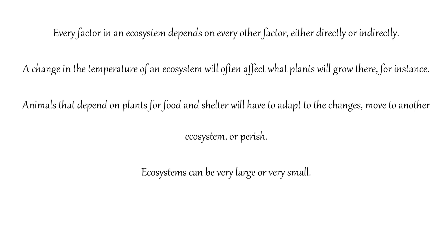Every factor in an ecosystem depends on every other factor either directly or indirectly. A change in temperature of an ecosystem will often affect what plants will grow there. For instance, animals that depend on plants for food and shelter will have to adapt to the changes, move to another ecosystem or perish.